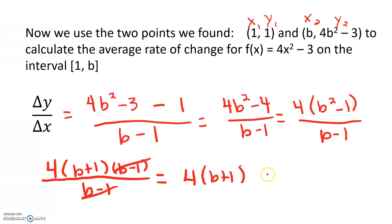But we do have to put a disclaimer out to the side. We have to say that b cannot equal 1, because if b equals 1 it would give us a 0 in the denominator, which means that the function would not exist at that point.